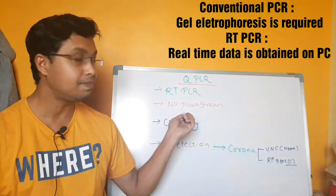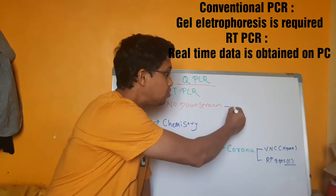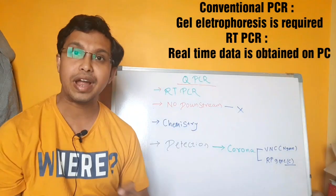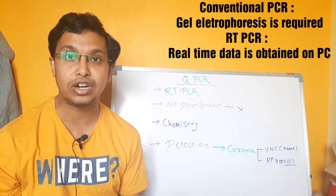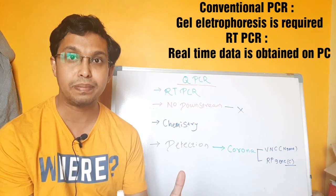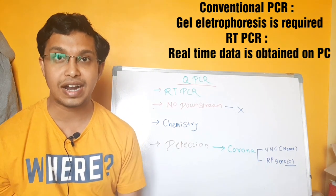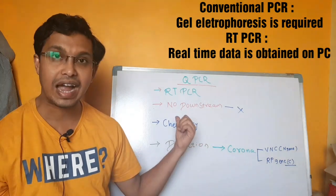Whereas in real-time PCR, there is no downstreaming required. What is the meaning of no downstreaming? That means you do not have to perform gel electrophoresis or examine the amplified product under UV light or a transilluminator. That is an advantage.